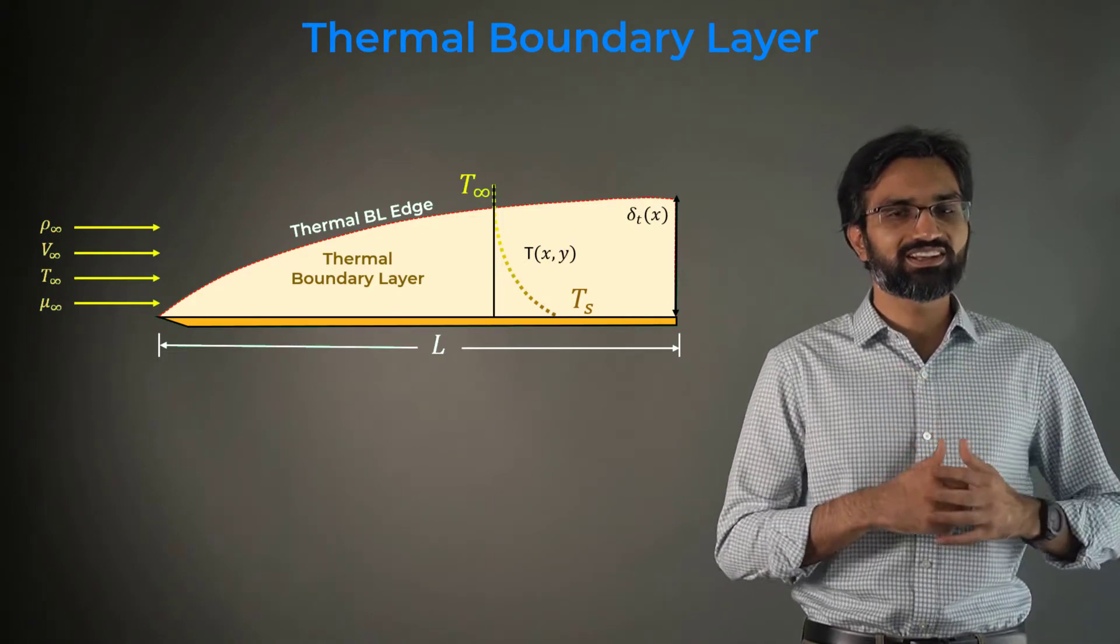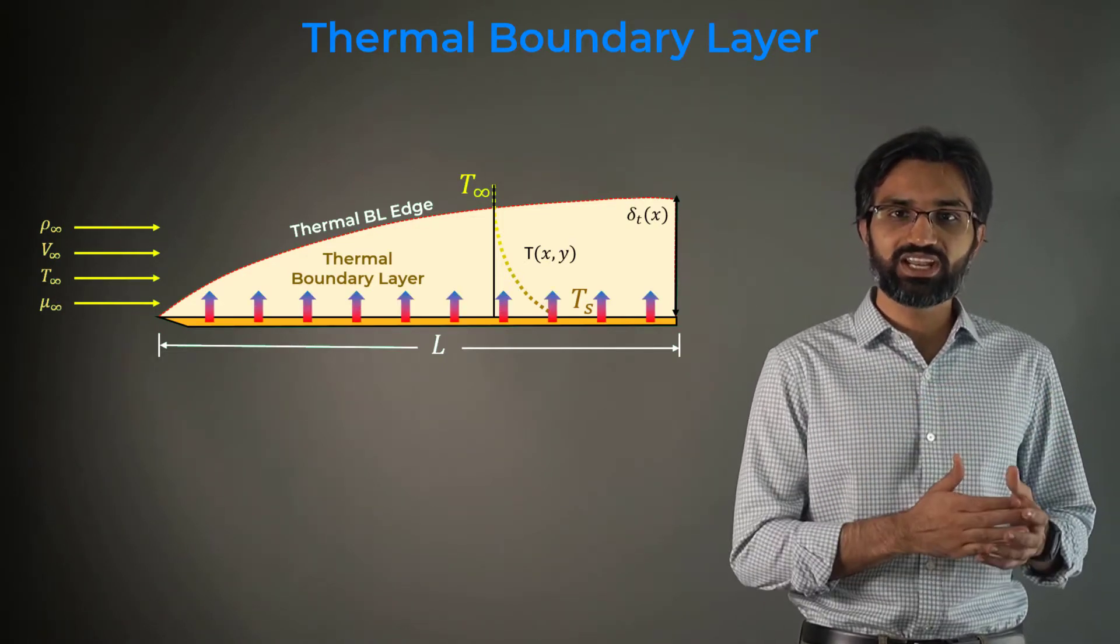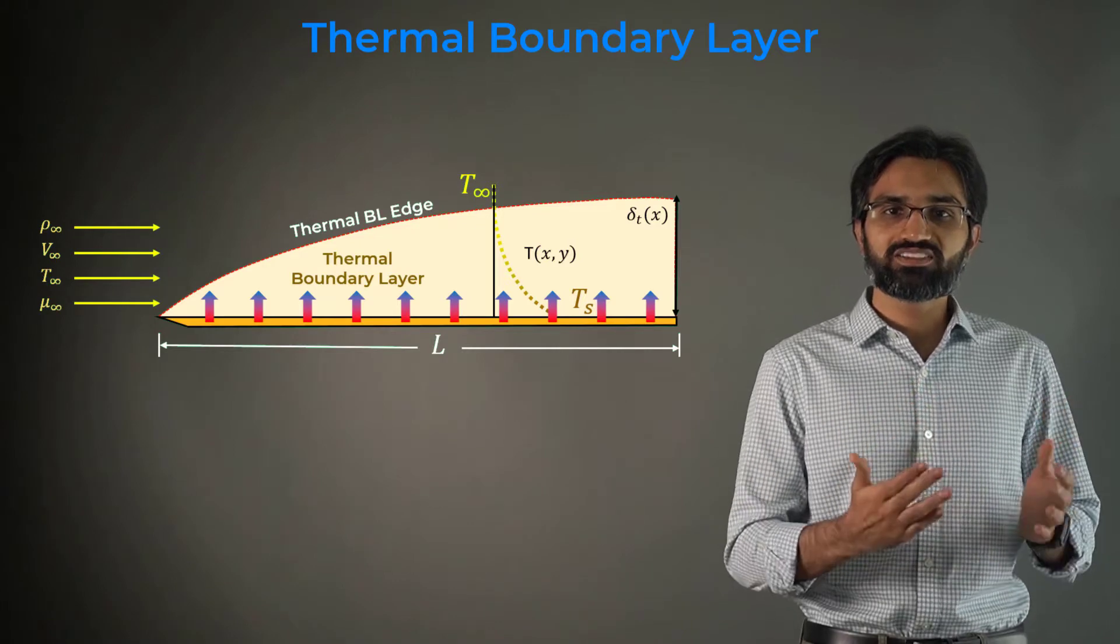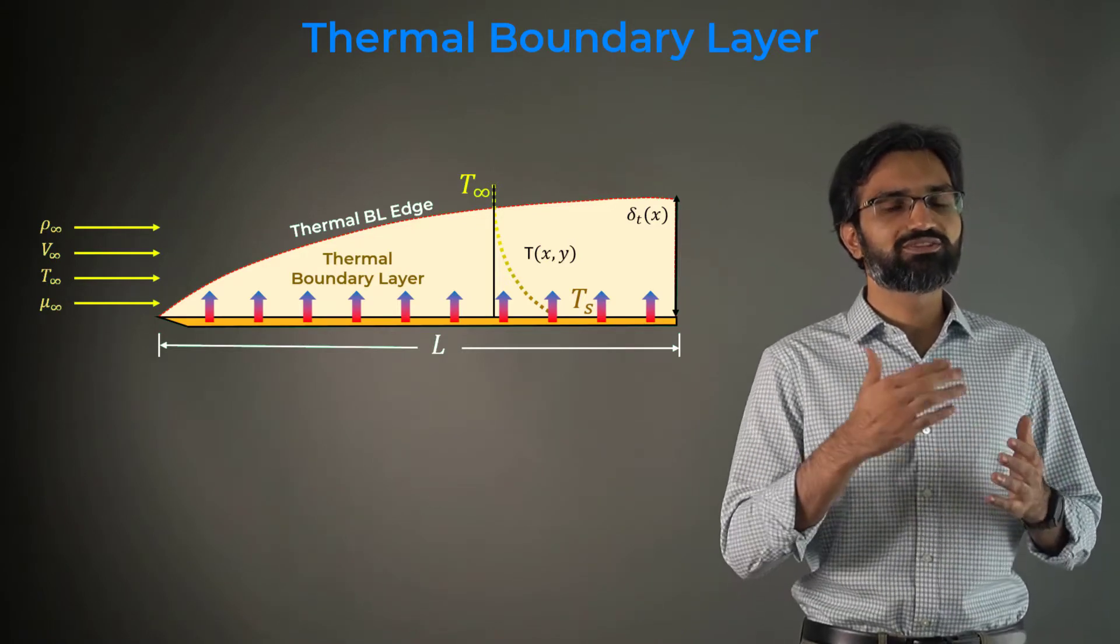From Fourier's law of heat conduction, any temperature gradient at the flat plate wall results in a heat transfer between the fluid and the wall.